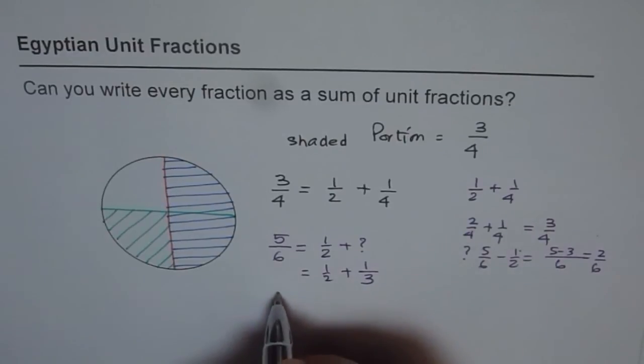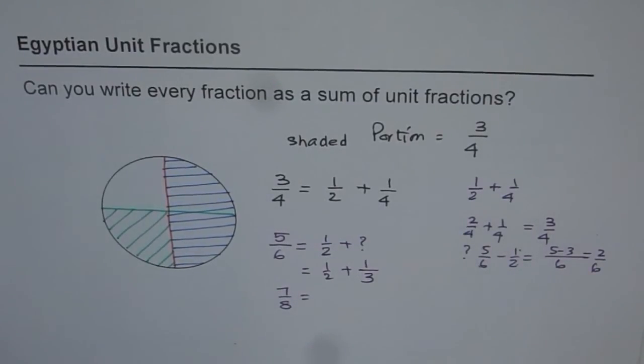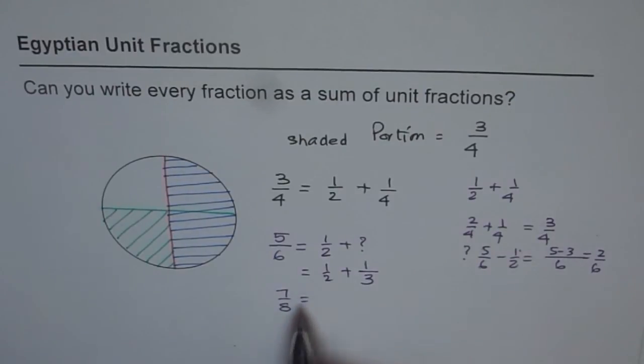Now figure out how to write seven-over-eight as a combination of unit fractions. Let that be an exercise for you. Start with half. Do the same thing and see if you can write it as a unit fraction. And then we'll see you in the next video and we'll explore some more things about unit fraction. I hope that catches your interest. Thank you and all the best.